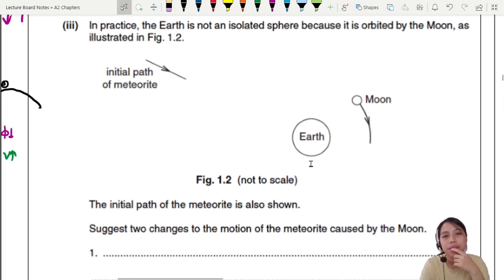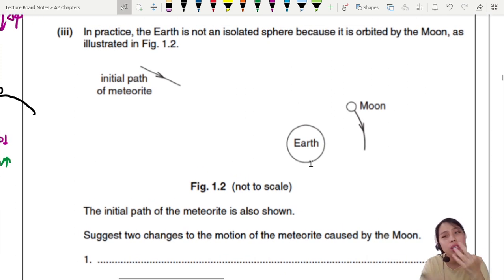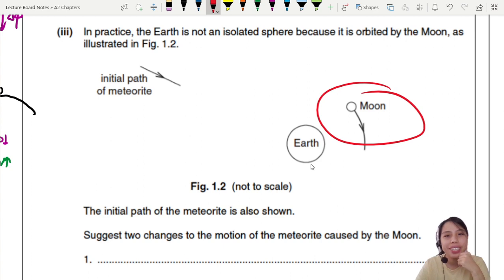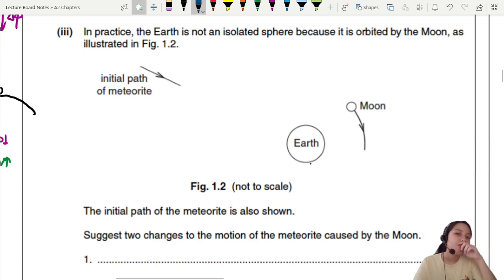So in practice, in real life, Earth is not isolated because we have a friend called the Moon also orbiting around us. So the initial path of the meteorite is shown. And normally, if we don't have the Moon, the meteorite will just travel in a straight line towards the Earth. Suggest two changes to the motion of the meteorite caused by the Moon. So how does the Moon affect this path?